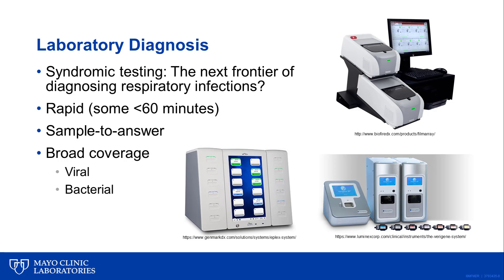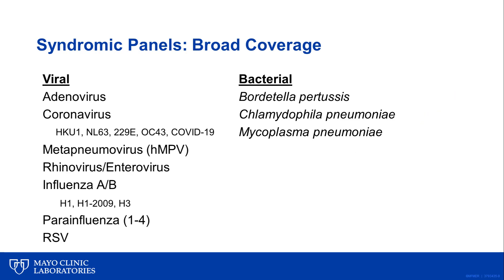These systems offer several advantages over conventional testing, including a relatively easy sample-to-answer workflow with a rapid turnaround time. In addition, some of these respiratory panels offer broad coverage, including up to 20 viral and bacterial targets, all in one test. This slide summarizes the targets that are commonly included on commercial respiratory multiplex panels. The coverage is quite broad and includes both viral and bacterial causes of respiratory infection, including some pathogens such as metapneumovirus and coronaviruses that were not routinely detected by conventional testing.